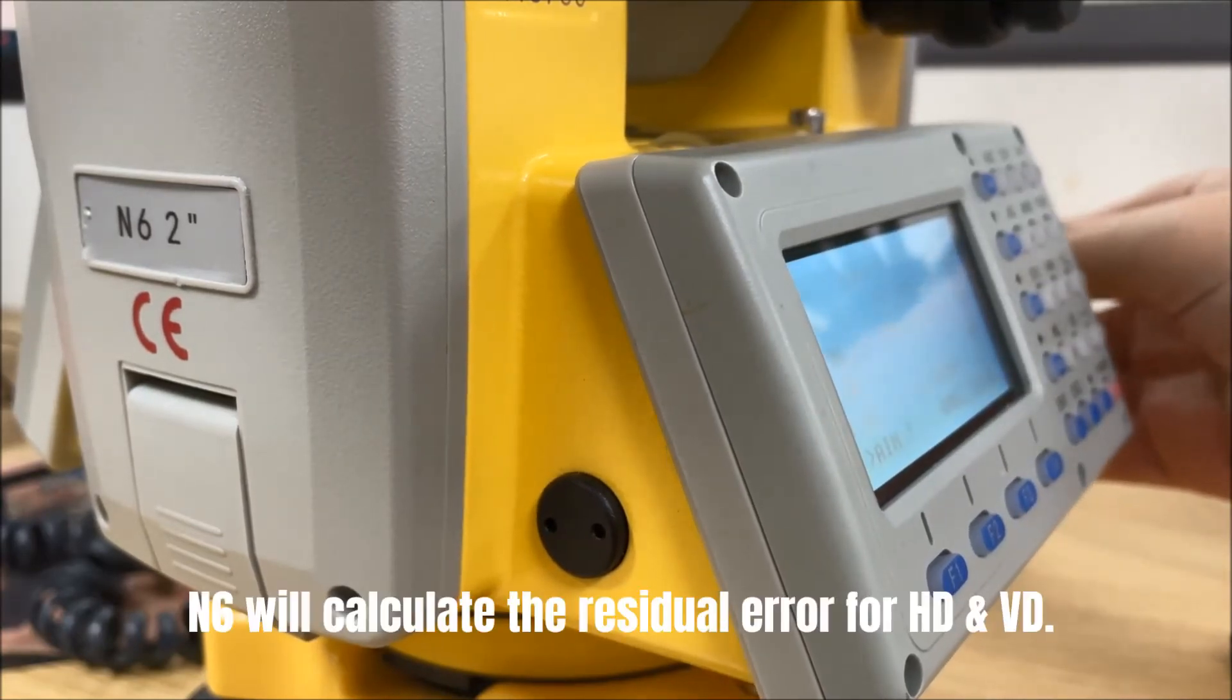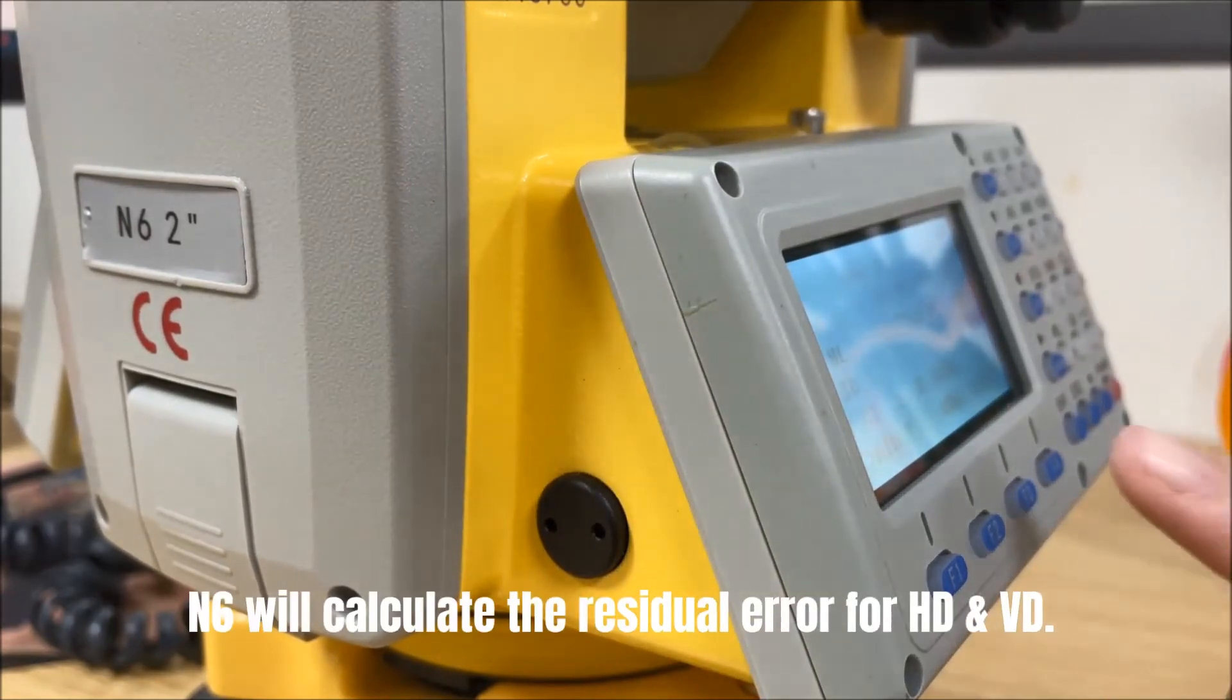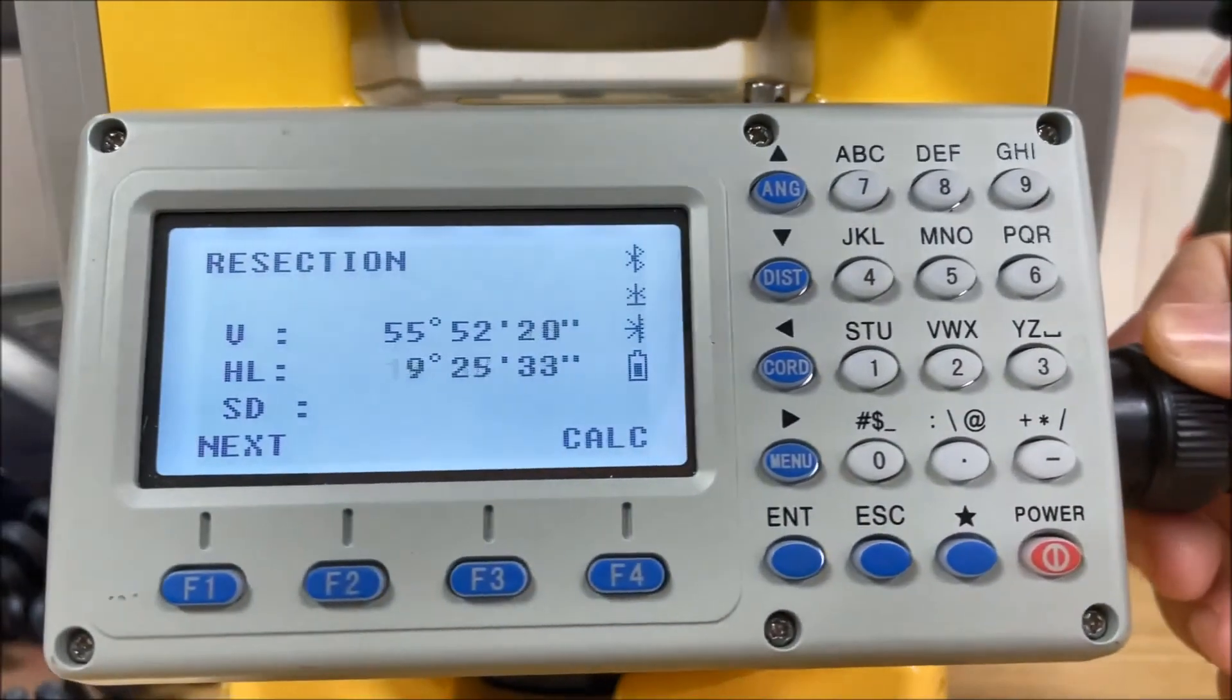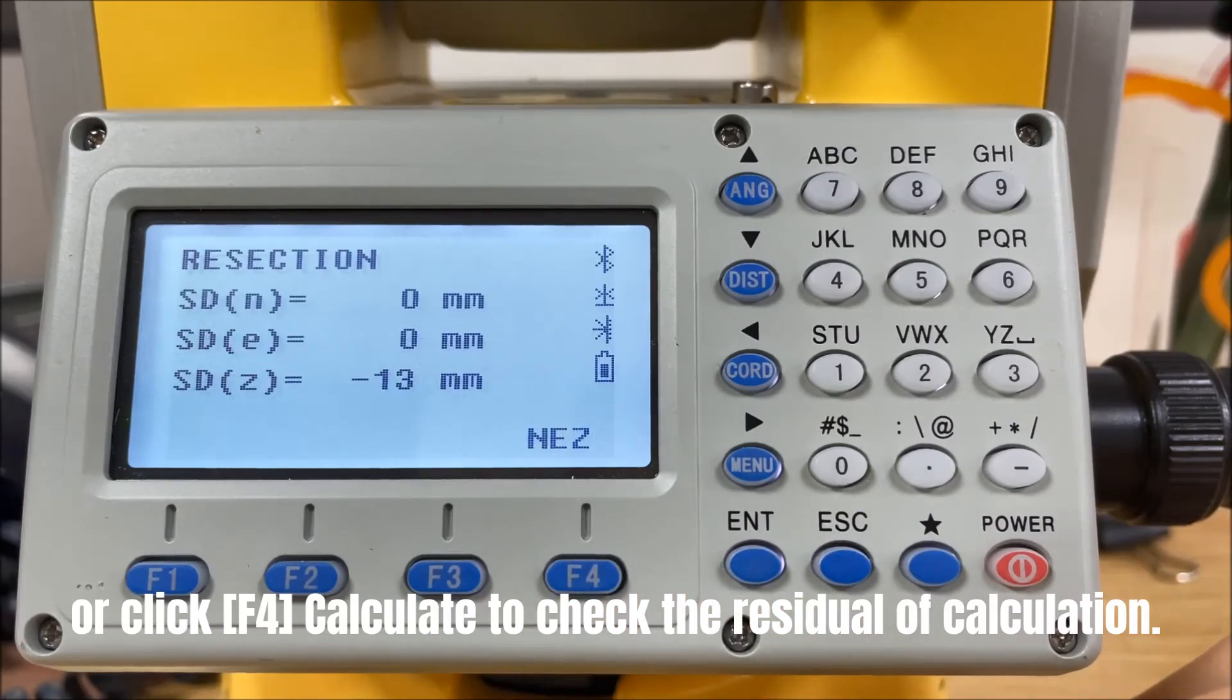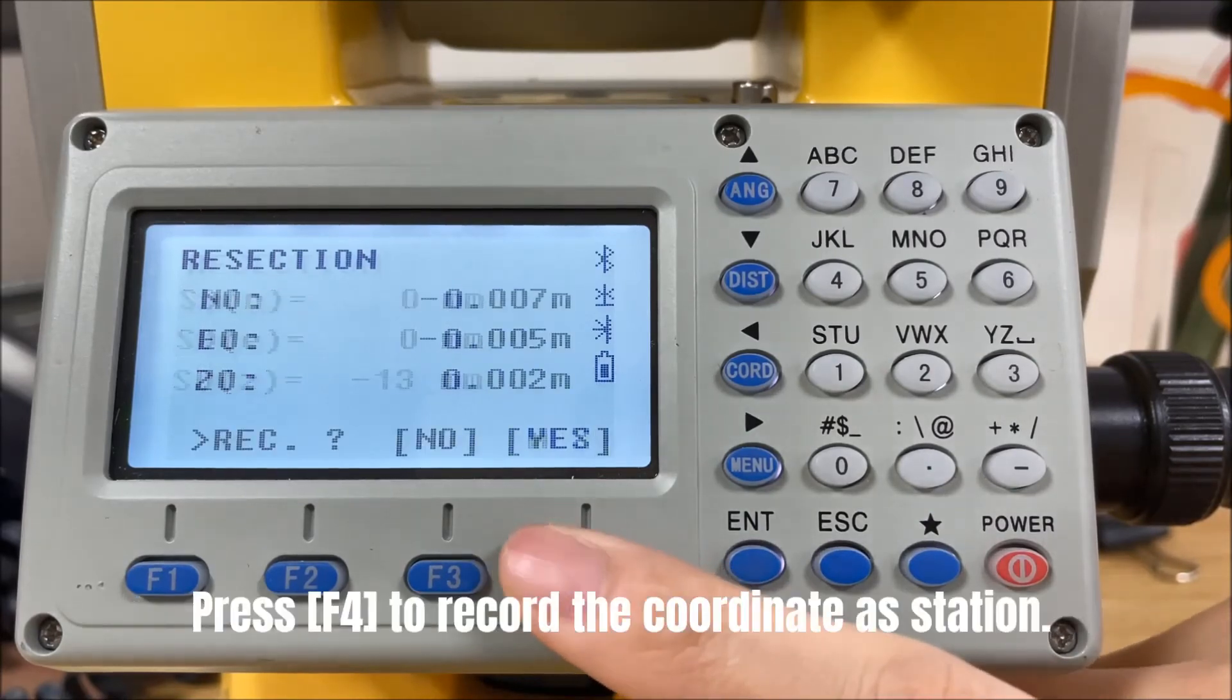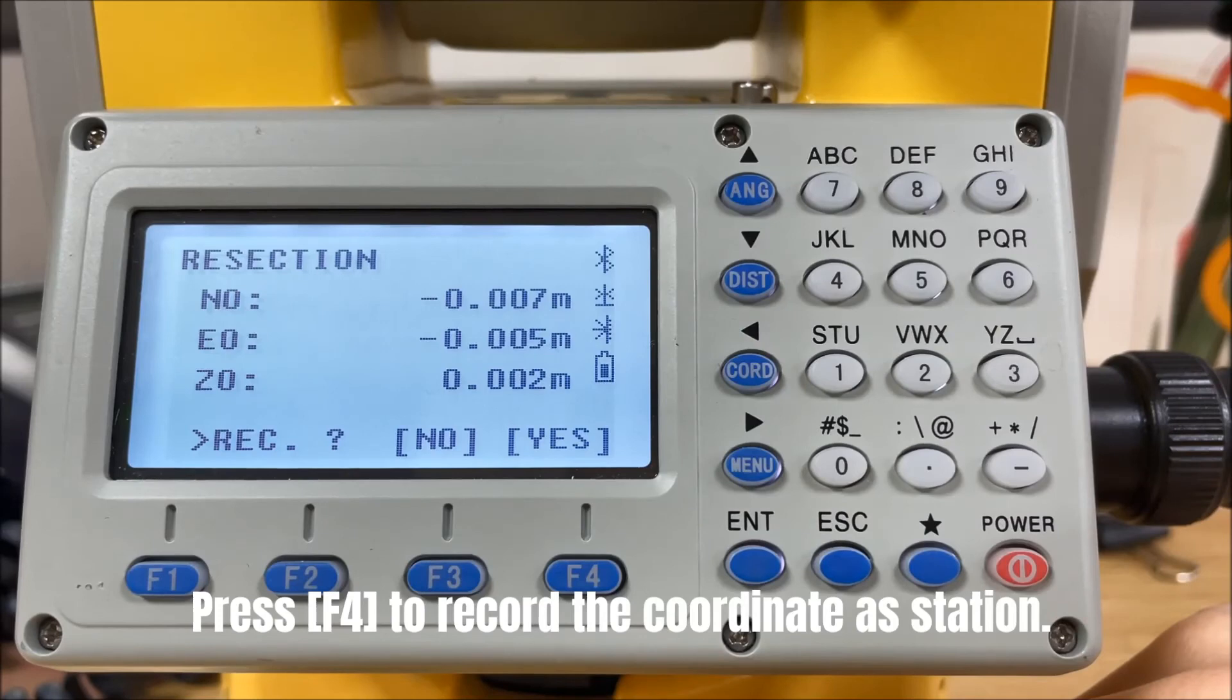N6 will calculate the residual error for horizontal and vertical distance. Click F1 next to measure the fourth point, or click F4 calculate to check the residual of calculation. Press F4 to record the coordinate as station.